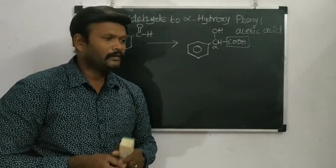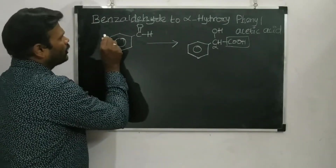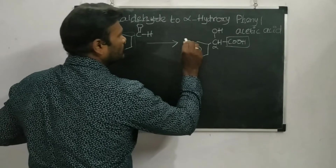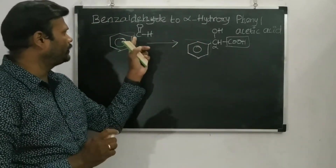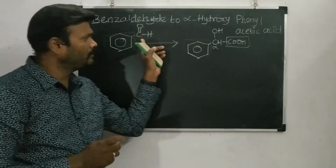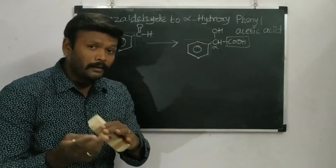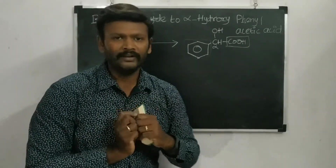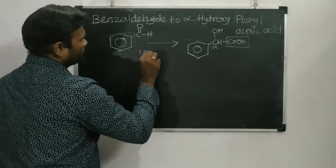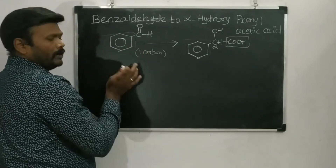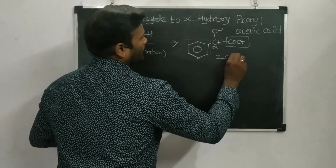When you look at the reactant and product, the common thing is the benzene or phenyl group — both have a phenyl group. In benzaldehyde, the phenyl ring is attached with only one carbon atom, but in alpha hydroxy phenyl acetic acid there are two carbon atoms attached to the phenyl ring.